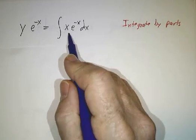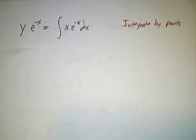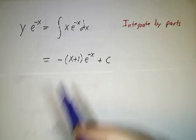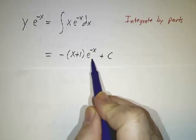This is a classic example of something that can be done by integration by parts. And then you do that integral and you get -(x+1)e^(-x)